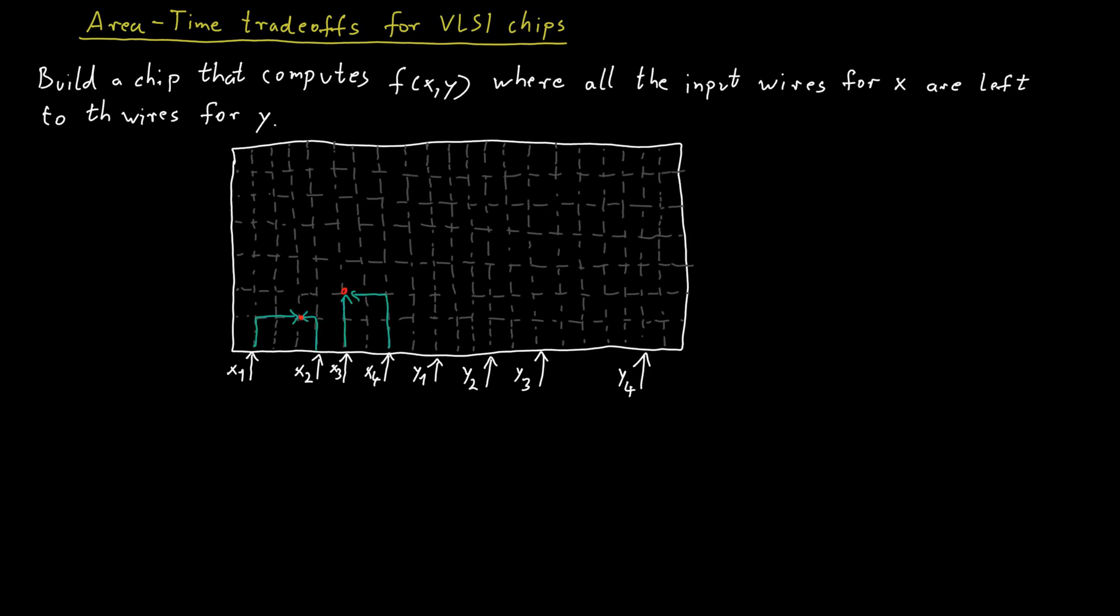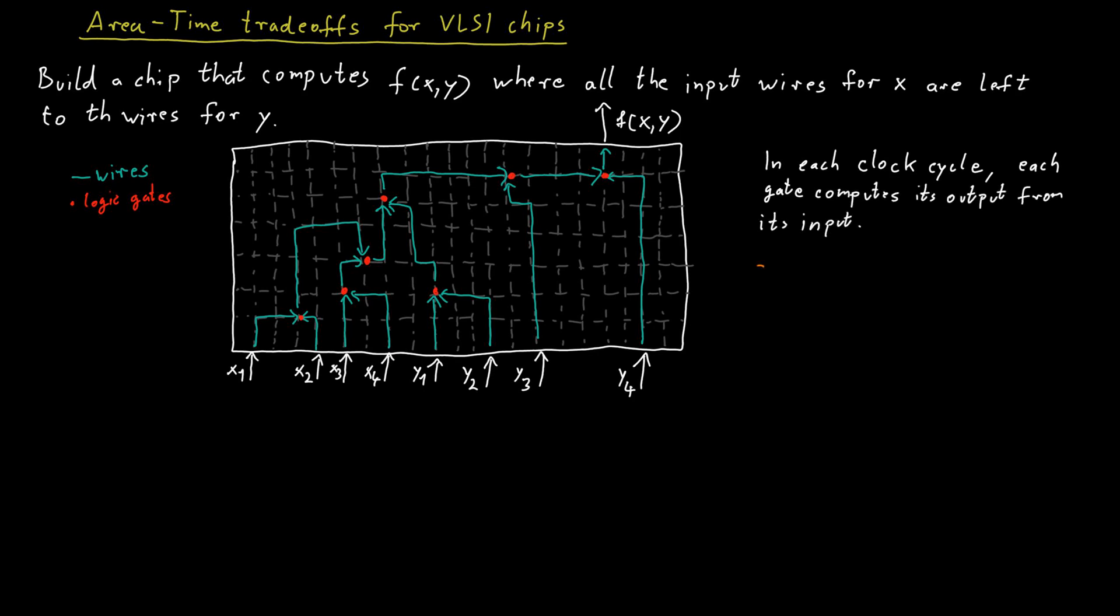The chip consists of wires and gates, like AND gates and OR gates and so on. For each clock cycle of the chip, each gate computes its output from its inputs. The question is, how many clock cycles do you need to compute a certain function?